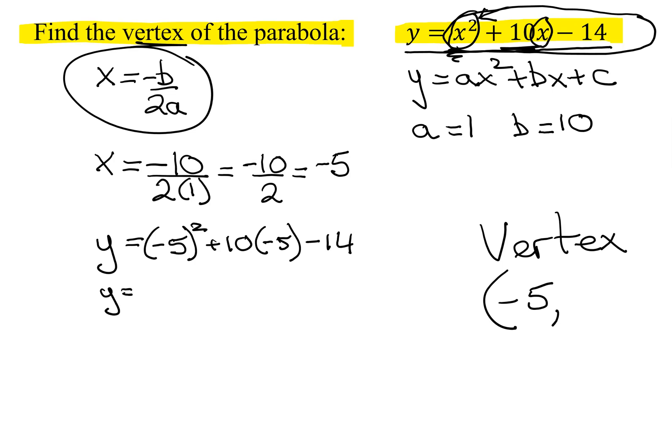So what's my y-value? Negative 5 all squared. It's negative 5 times negative 5, which is positive 25, plus 10 times negative 5 is minus 50, minus 14.